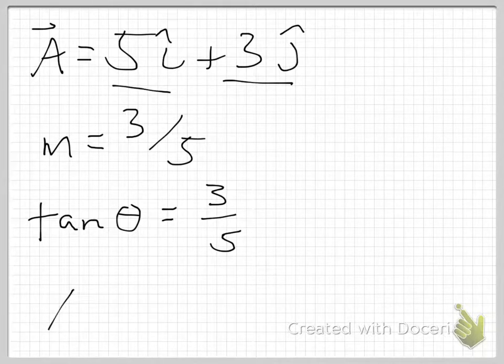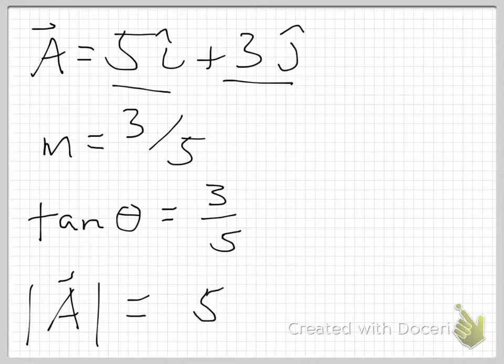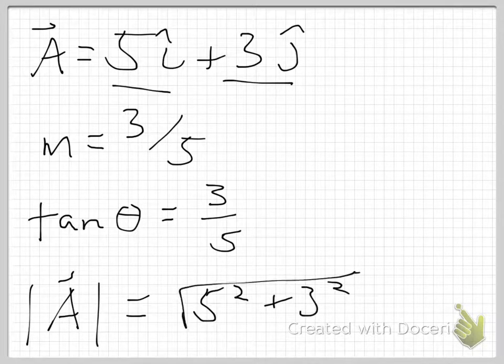So the magnitude of A, which is typically written like this, absolute value—those look like l's, sorry, I'm doing this with my finger. The absolute value of A is then just five squared, in whatever units are attached to that, plus three squared, quantity square root. That's just the Pythagorean theorem.